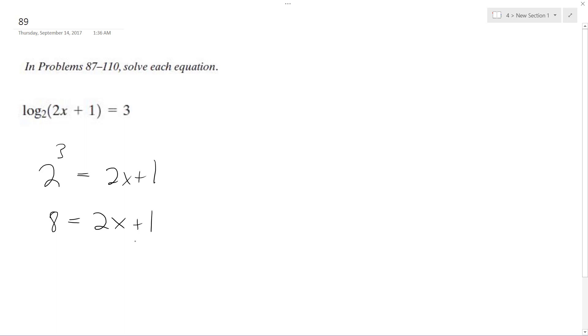So subtract 1 from both sides. I get 2x is equal to 7. Divide by 2, we get x is equal to 7 over 2, or 3.5.